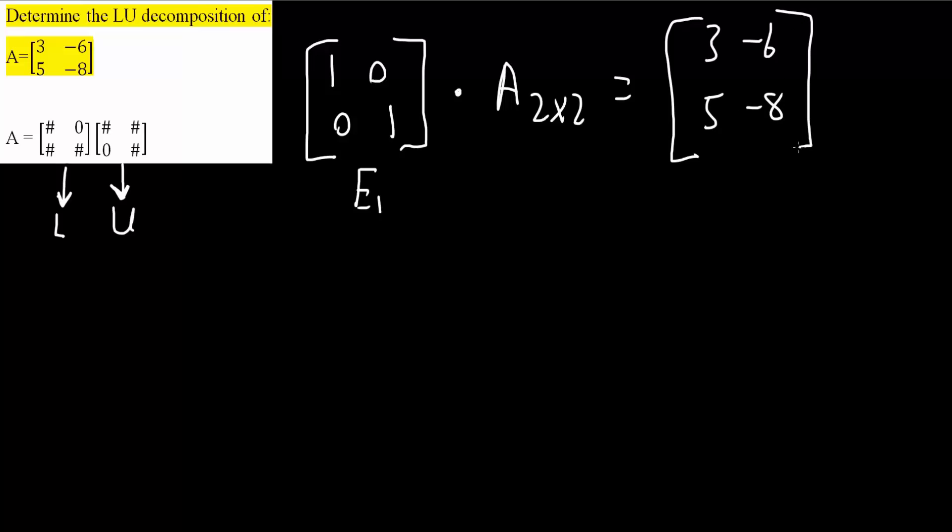And what I want to do next is come up with a way to obtain this. I want my L to be number, number, number, and on top right to be 0. I want my U to be number, number, number, and the bottom left to be 0.